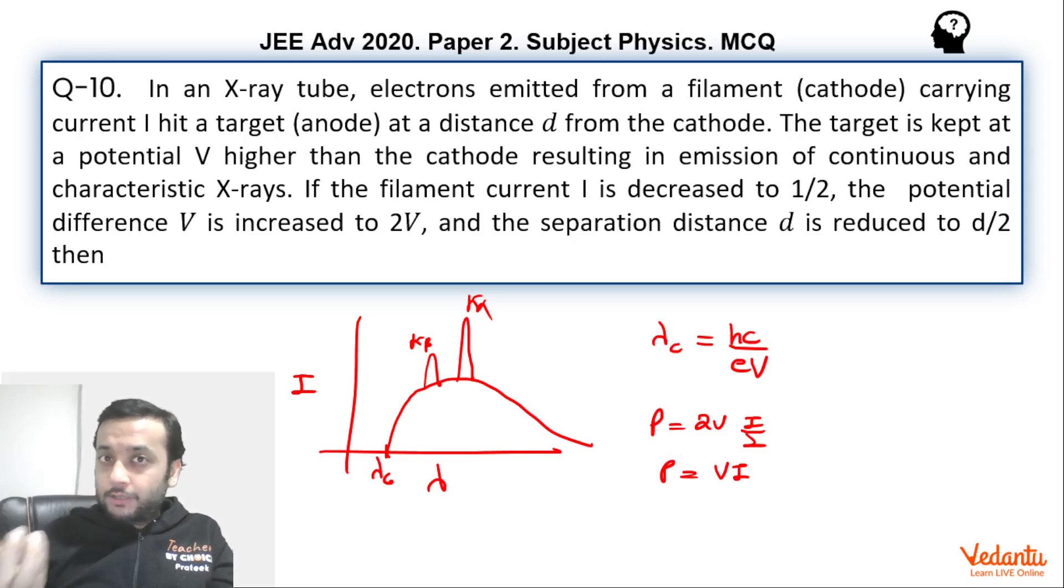So basically energy of all the X-rays that will be produced is going to remain constant. Hence, we can say that energy of all the X-rays are going to remain constant. Now, if you have increased the value of potential difference, you have made it double. Hence, we can say that lambda cutoff will become half because that only depends upon potential difference. So basically lambda cutoff will become half.